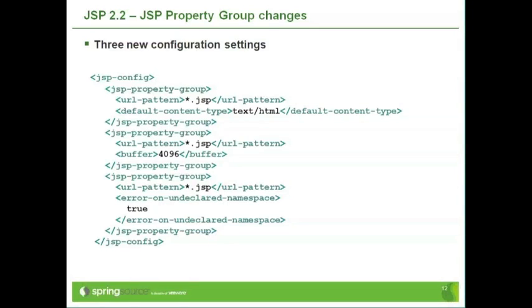You can set the default buffer size — here we're setting it to 4K. And it also introduces a new property, this error on undeclared namespace, which you can then default to true.